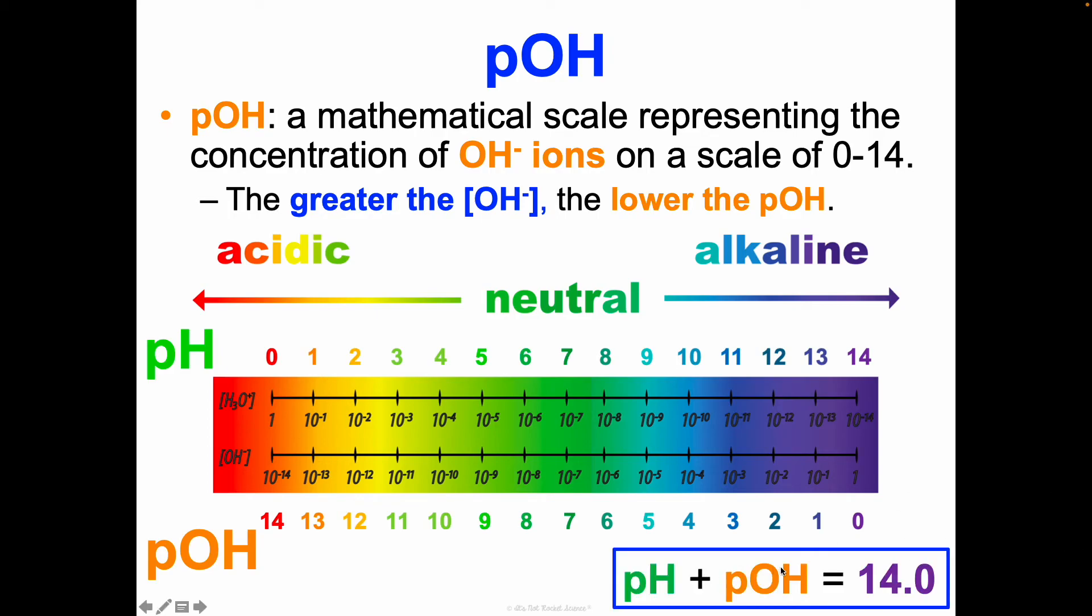pH plus pOH always equals 14.0. Notice that neutral, it's a 7 pH, it's a 7 pOH. If we look at something really acidic, like a pH of 2, that has a pOH of 12. They add up to 14 here. As pH goes up, pOH goes down and vice versa.